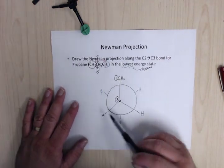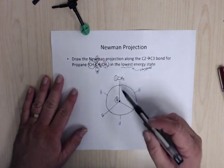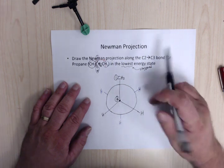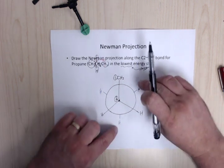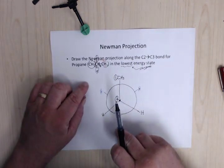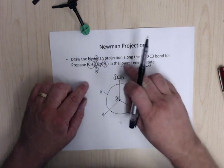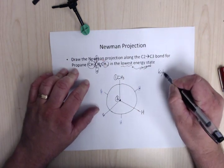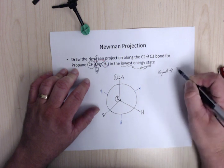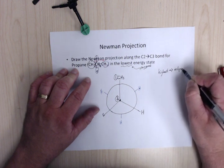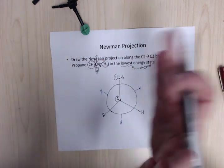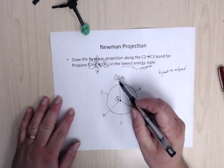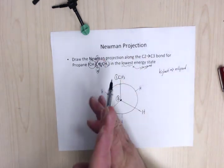If you had a methyl group on the front and back, to get the lowest energy state you'd need to rotate the back so they're anti. For the highest energy state, it's going to be eclipsed — where they're right on top of each other — and you want the largest group on the front and the largest group on the back sitting right on top of each other.